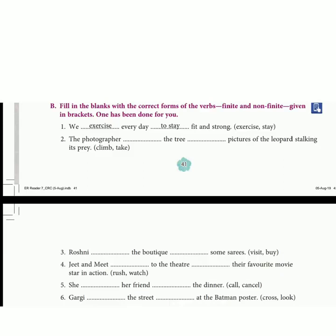Sentence number five: She [dash] her friend [dash] the dinner. In the bracket we have the verbs call and cancel.